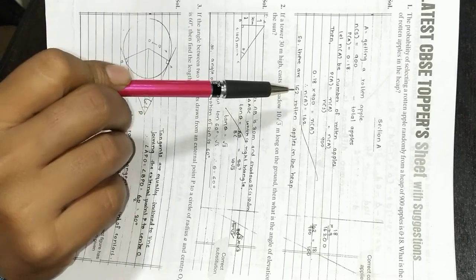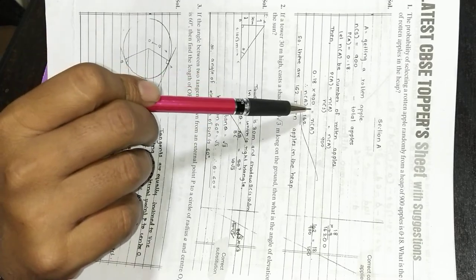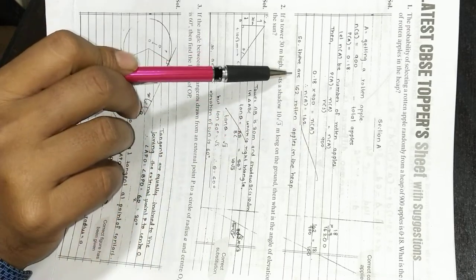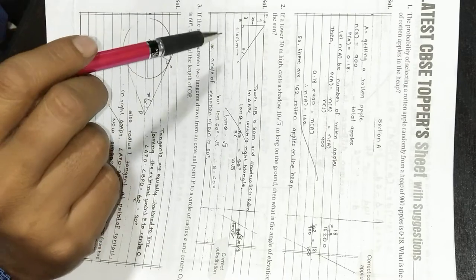Now what some students do is, thinking it's only one mark question they just give the answer directly. In that case that student might get half marks also. So it depends completely according to the examiner.